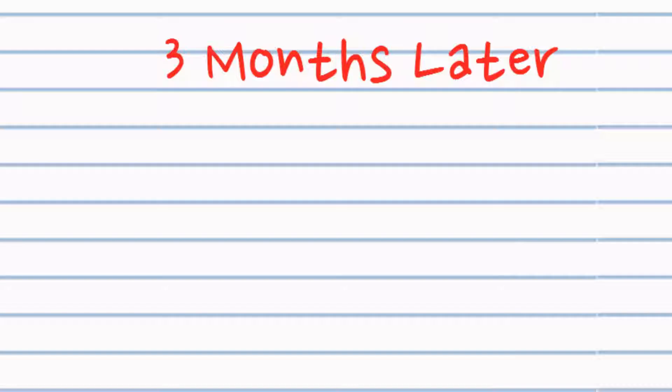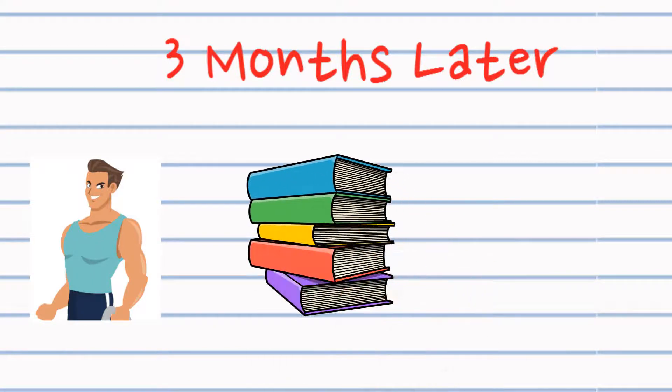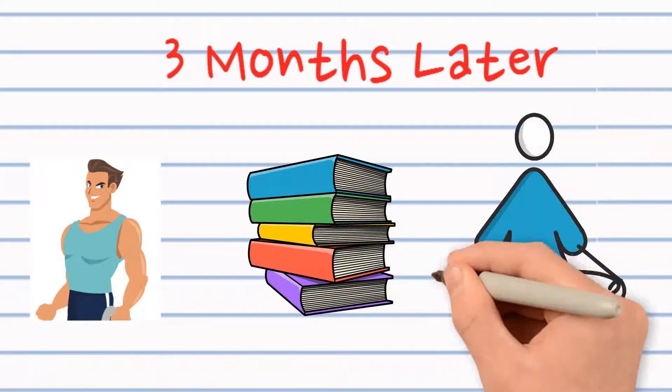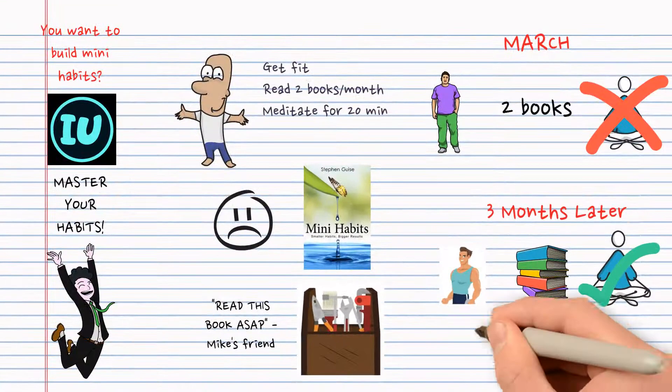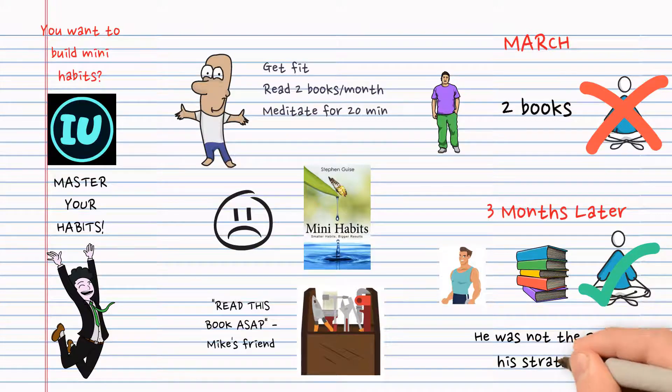Fast forward three months and Mike has lost 12 pounds, he has read five books, and meditates every day for at least four minutes. All of Mike's self-defeating dialogue is gone and he realized he was never the problem. The problem was his strategy.